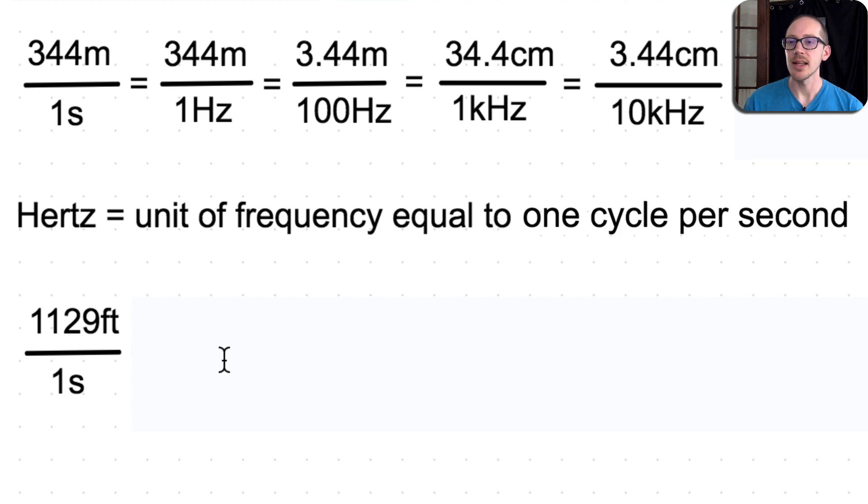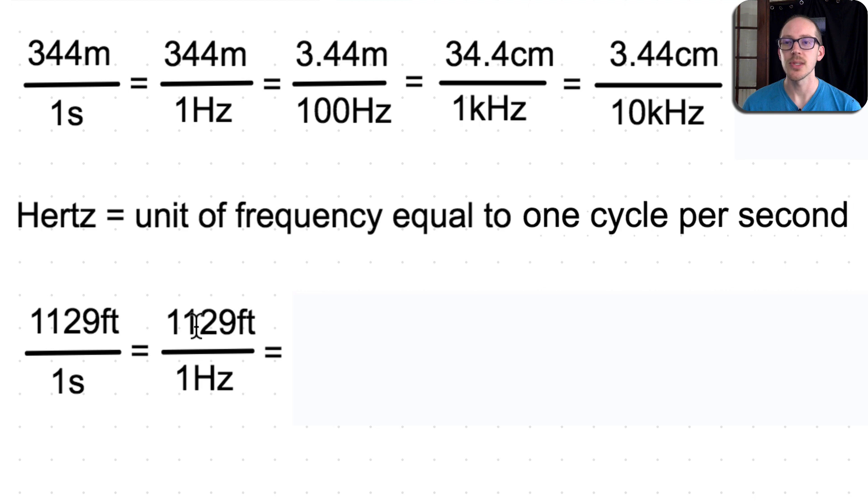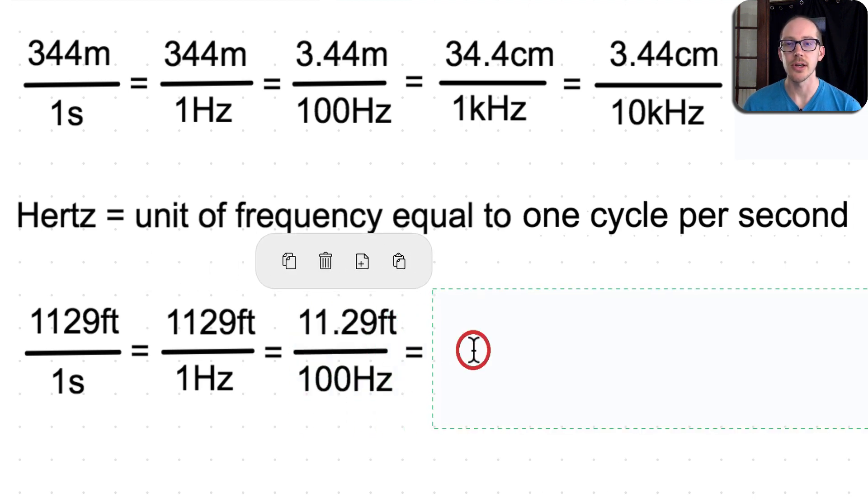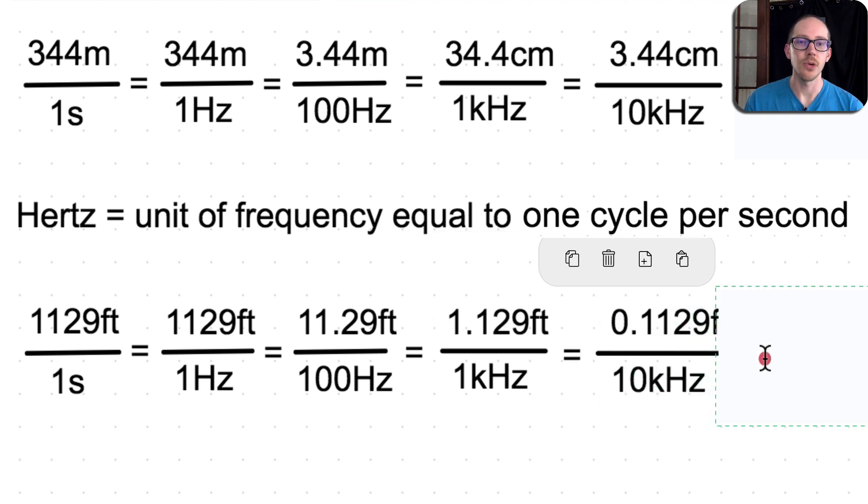Okay, so speed of sound, 1129 feet per second, that means that one hertz must have a wavelength of 1129 feet. One hertz equals one second, one cycle per period, 1129 feet. So if we're going to add two zeros and make this 100 hertz, then we're going to move the decimal place down one, two, so it'll be 11.29 feet for 100 hertz. And if we go up to a thousand hertz, we'll move the decimal place one more time, and it'll be 1.129 feet for one kilohertz. And if we do that one more time and go up to 10 kilohertz, we'll move the decimal place down one more time, it'll be 0.1129 feet for 10 kilohertz or 1.35 inches.